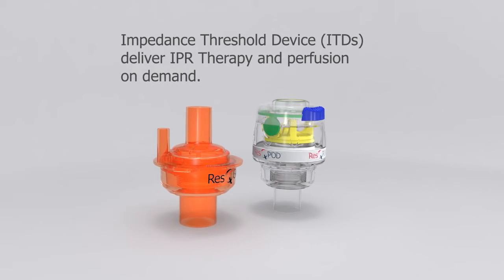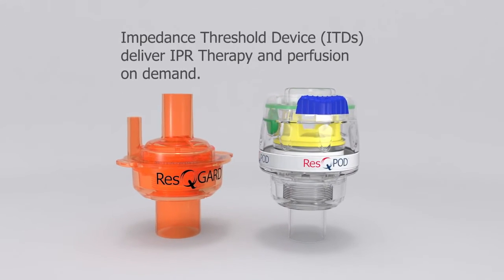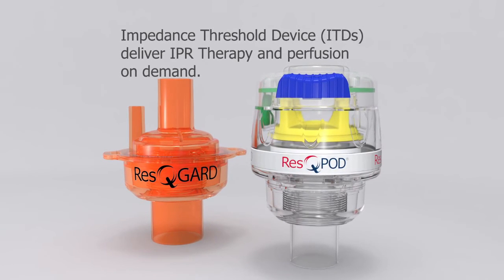There are two types of impedance threshold devices. The Rescue Guard ITD provides perfusion on demand to improve vital organ blood flow in various types of shock, while the Rescue Pod ITD is used to enhance blood flow during CPR.